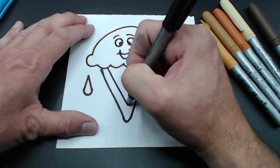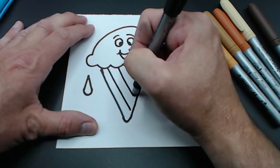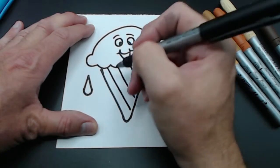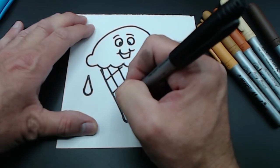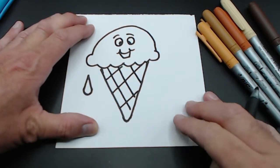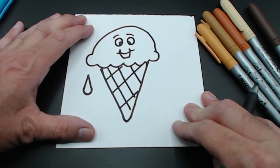Oh we forgot one major detail down here on the cone. We're gonna do some diagonal lines going down, and we're gonna make some diagonal lines going up. And there we have it, that is our chocolate scoop of ice cream.